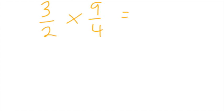So three times nine is 27. Three halves times nine quarters.